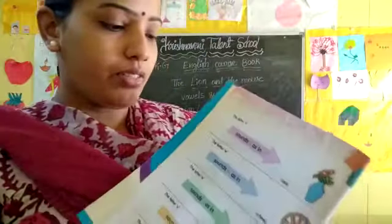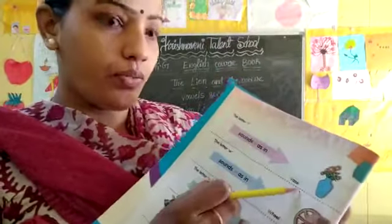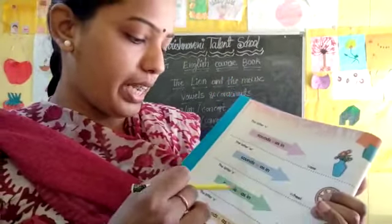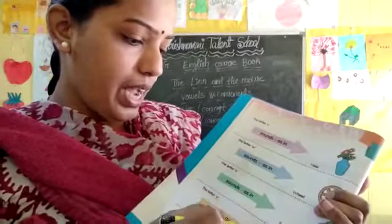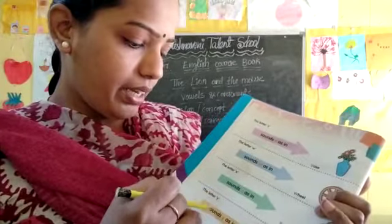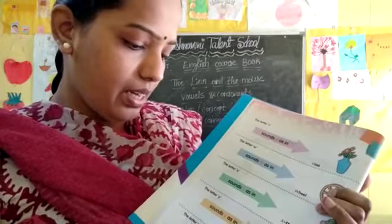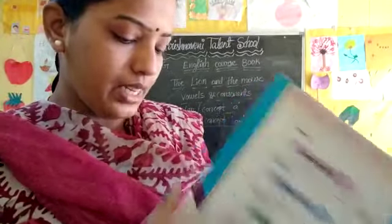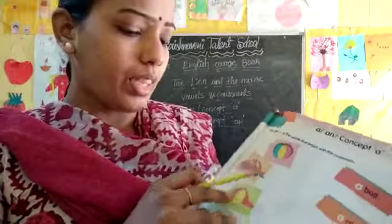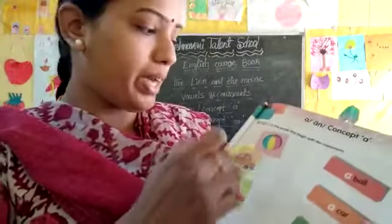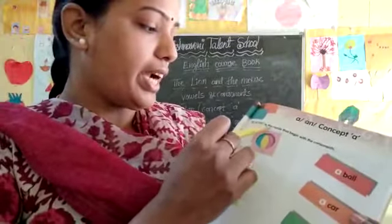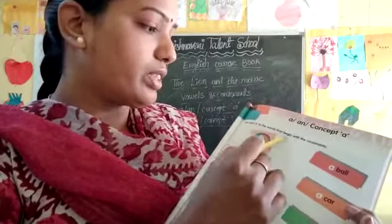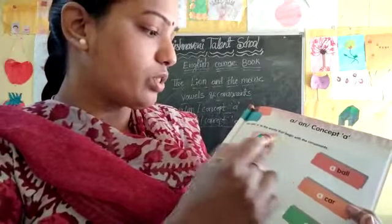The letter V as in Vase, the letter W as in Watch, the letter X as in X-mas, the letter Y as in Yoke, the letter Z as in Zip. Yes, you have learned. Open page number 18 — we add A to the words that begin with consonants.